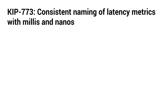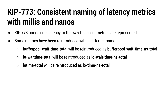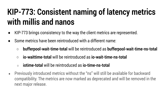Rounding out the Kafka Core KIPs is KIP 773, which provides some consistency in the way client metrics are named, specifically where millis and nanos are involved. A handful of metrics will be reintroduced with new names that reflect this: BufferPool wait time total, IO wait time total, and IO time total will now include NS for nanoseconds. The metrics without NS in their name will be available for backwards compatibility only — they are marked deprecated and will be deleted in the next release.